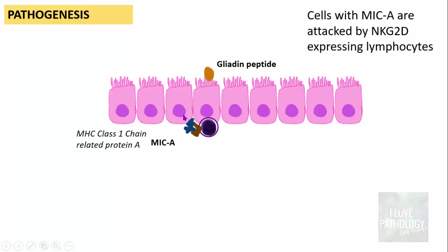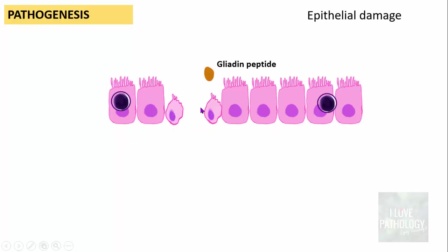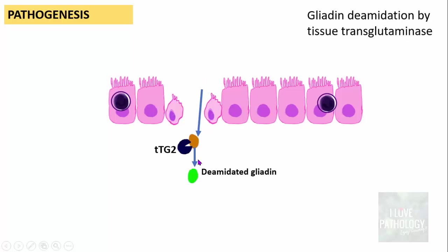When this interaction occurs, the epithelial cell is particularly damaged — there is epithelial damage caused by interaction between activated intra-epithelial T lymphocytes and the cells carrying the MICA molecule. When many such cells are damaged, the gliadin peptide can easily enter into the lamina propria, allowing passage of other gliadin peptides there. In the lamina propria, this gliadin is deamidated by tissue transglutaminase, producing deamidated gliadin.